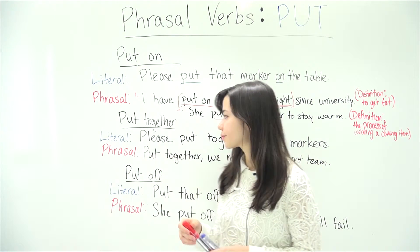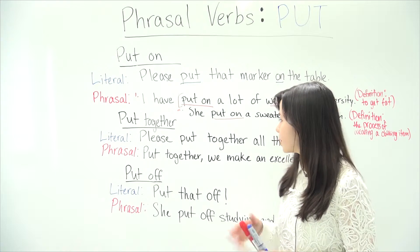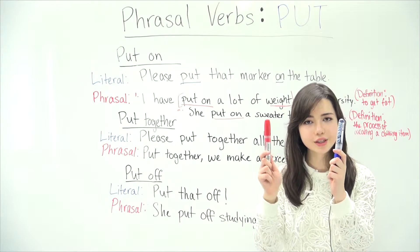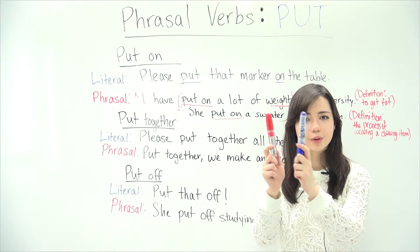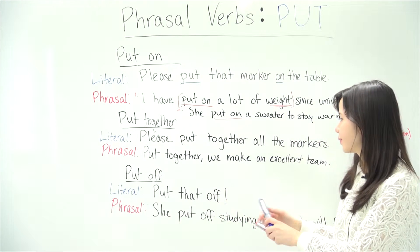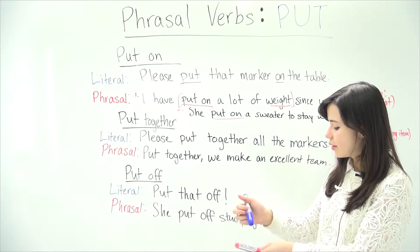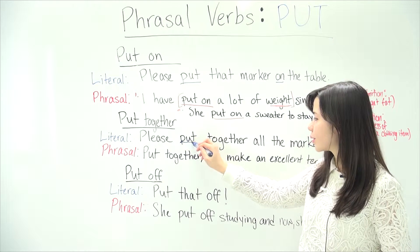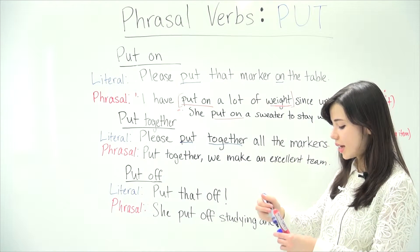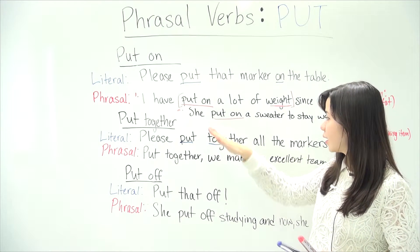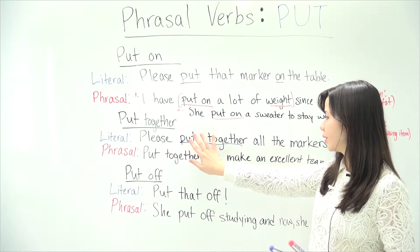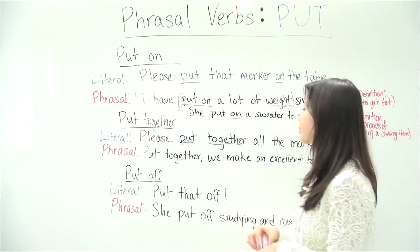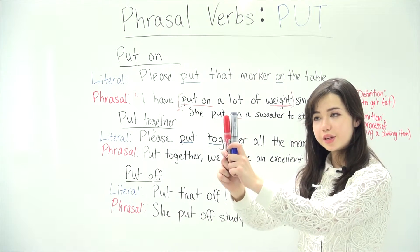Now that we've covered 'put on', let's move on to 'put together'. Let's look at the example sentence: 'Please put together all the markers.' I have my two markers here and I'm saying put them together — they are together. That's the literal meaning. As I stated in the past video, when you have phrasal verbs, you can have the object in the middle of the phrase. I could say 'put all of the markers together' — you're putting them next to each other.